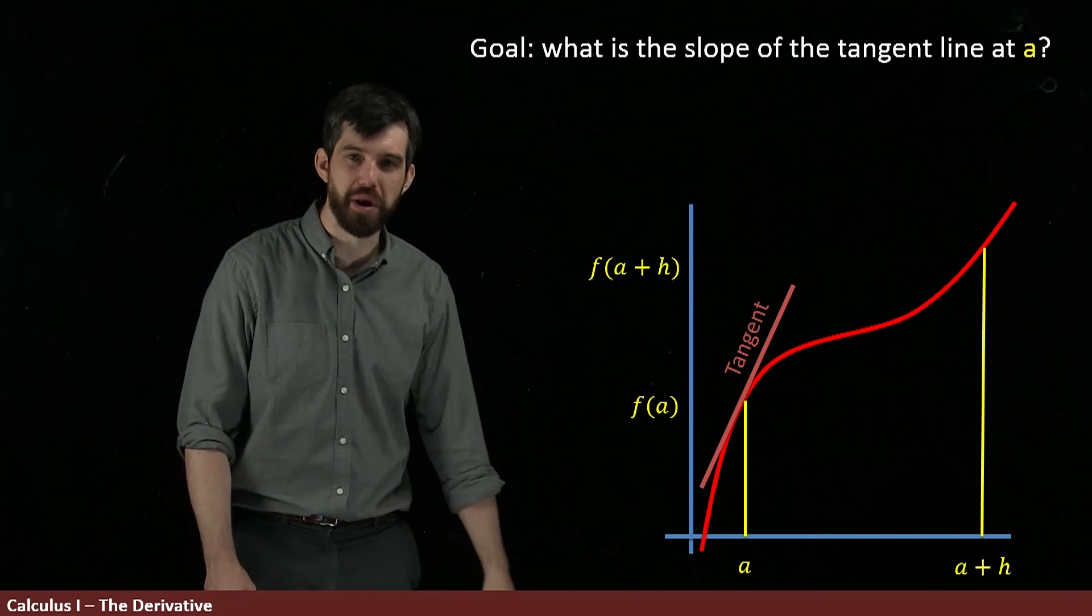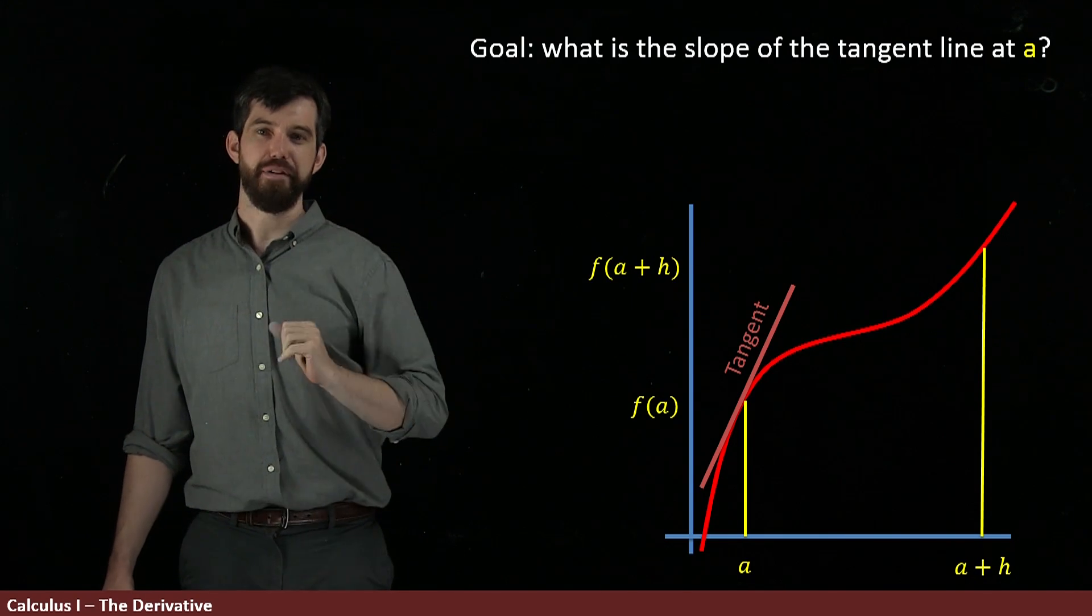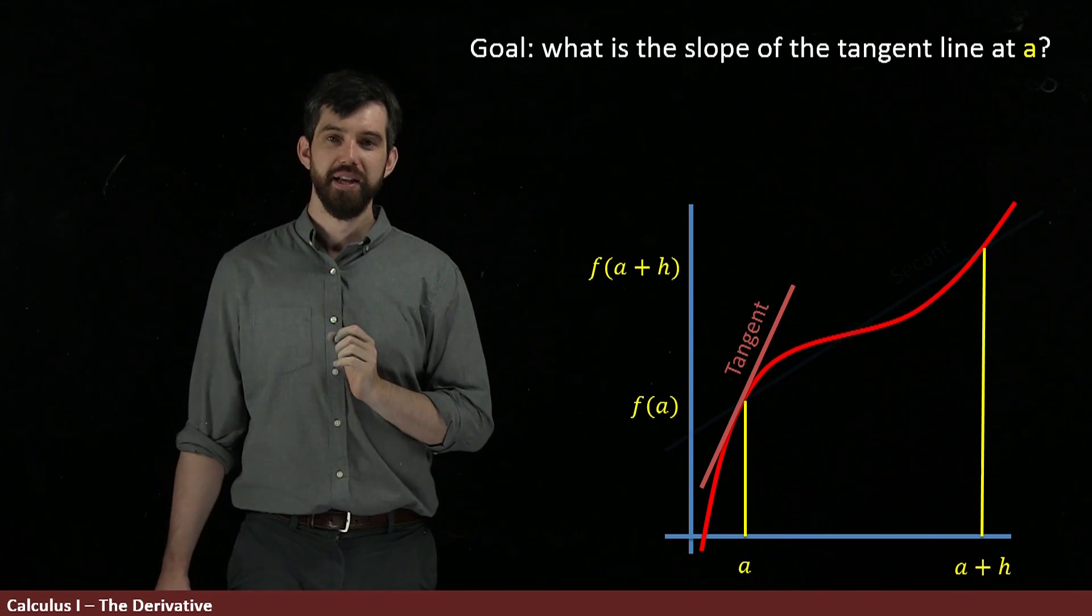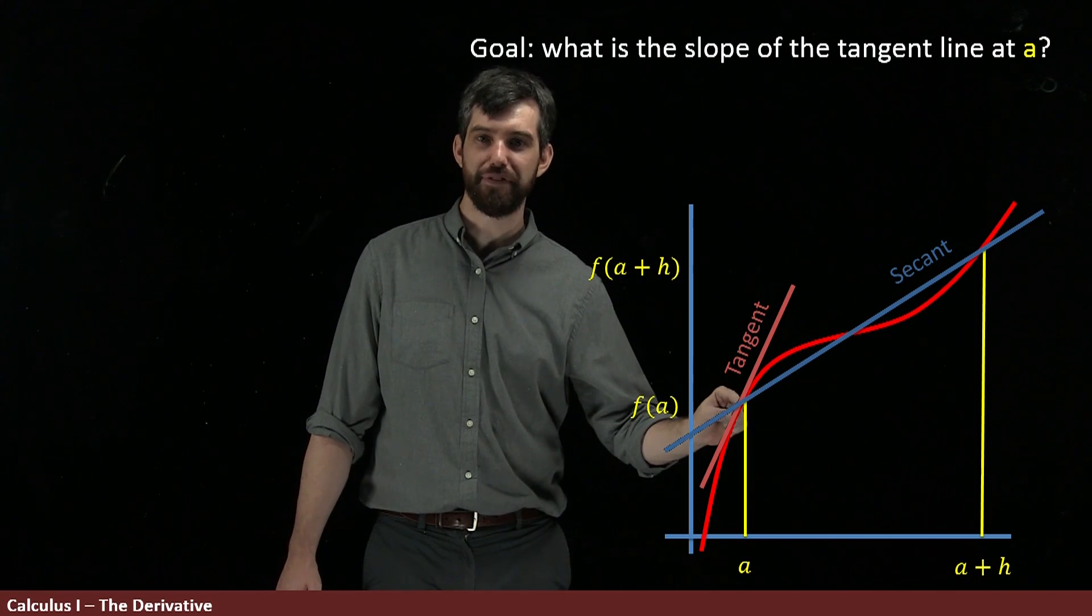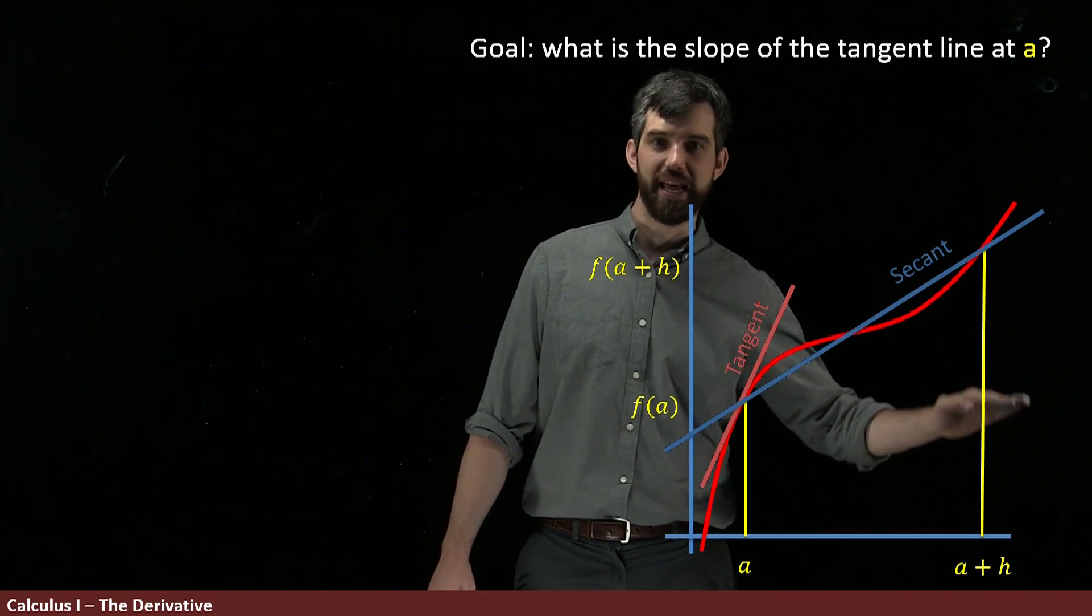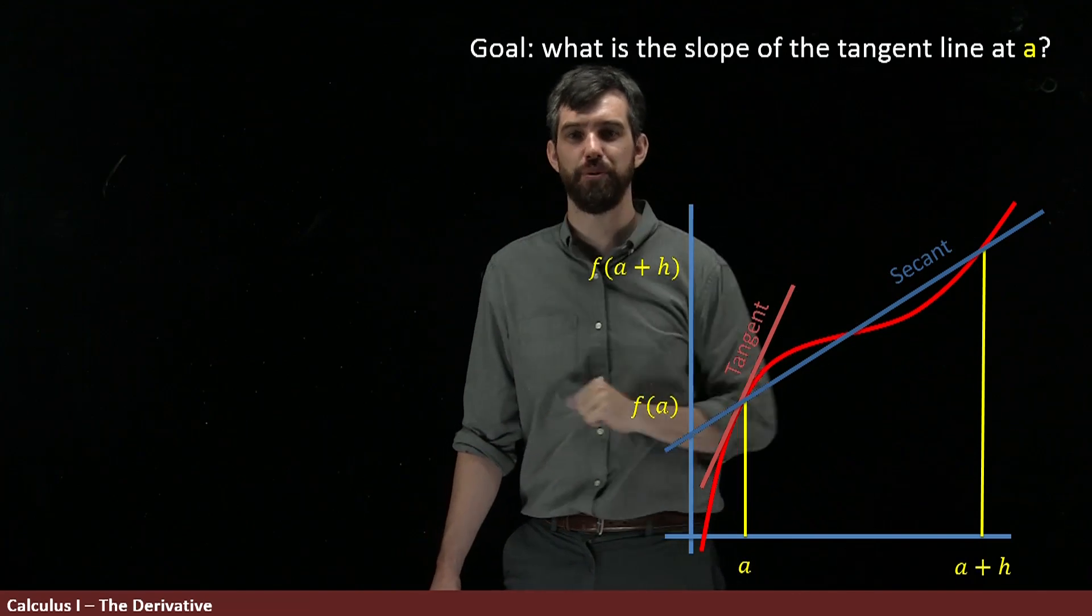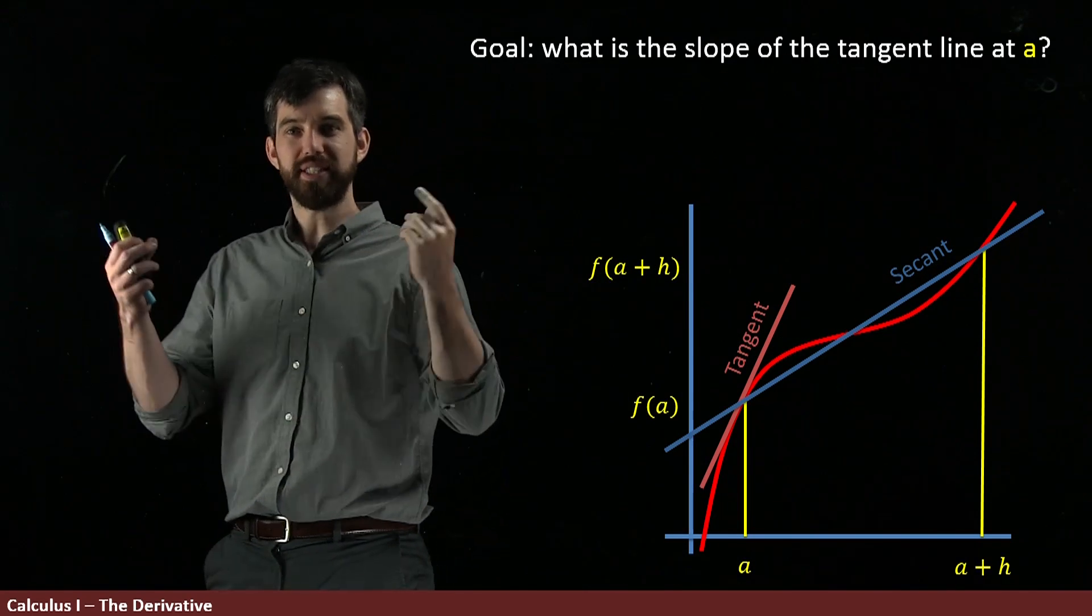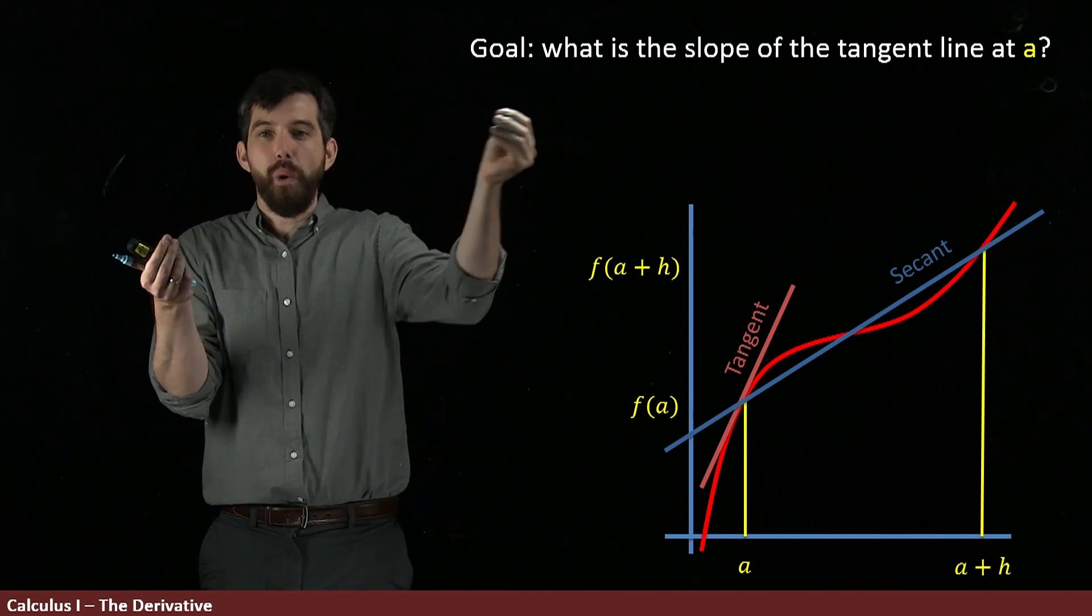Now why am I doing this? Why am I adding this other point? The thing I do know how to compute, the thing I do know how to define is a secant line. So I'm going to draw, this is the secant line that goes to this point a f of a up to a plus h, f of a plus h. You get this nice line that goes between those.